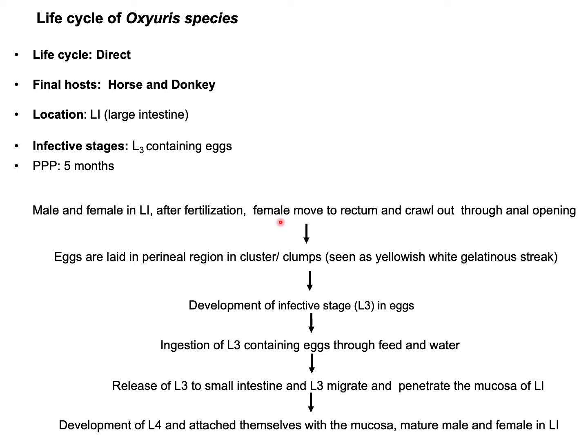The male and female parasites are located in the large intestine. After fertilization, the female moves towards the rectum and crawls out through the anal opening to lay eggs. The female lays eggs in clusters or clumps, which can be seen as yellowish or white gelatinous streaks on the perineal region. Within a few hours of egg laying, the infective stage L3 develops within the eggs.